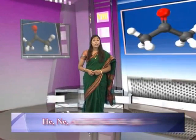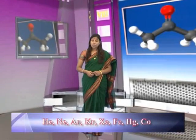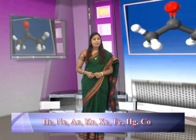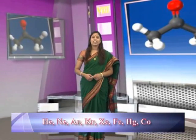An atom is the smallest particle of an element, and the symbol of an element represents one individual atom of that element. Some elements exist independently, for example helium, neon, argon, krypton, xenon, iron, mercury and cobalt. However, many elements occur in combination with one or more atoms of their own kind or with atoms of other elements as molecules.